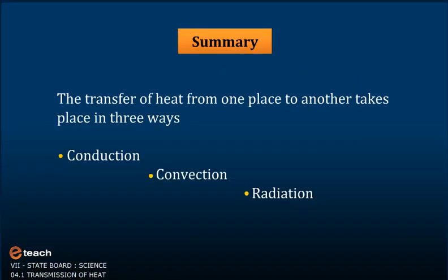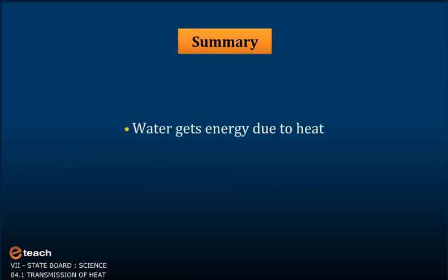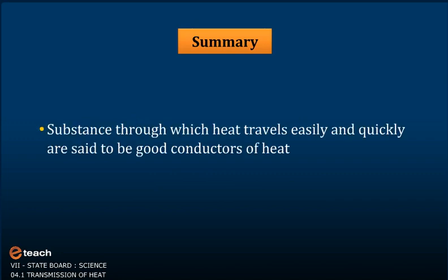Summary. The transfer of heat from one place to another takes place in three ways: Conduction, Convection, Radiation. Water gets energy due to heat. Substances through which heat travels easily and quickly are said to be the good conductors of heat. Substances through which heat travels very slowly are called bad conductors of heat.